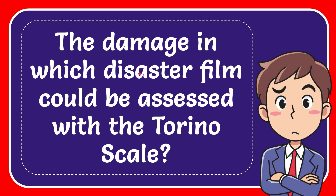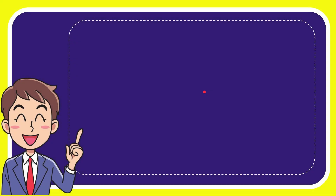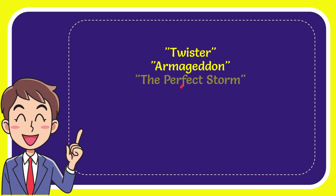In this video I'm going to give you an answer for a question, and the question is: the damage in which disaster film could be assessed with the Torino Scale? Here is the list of options: the first option is Twister, the second option is Armageddon, the third option is A Perfect Storm, and the last option is The Day After Tomorrow.